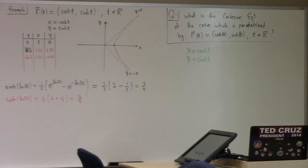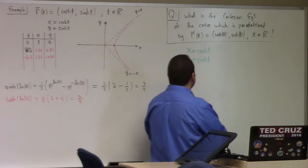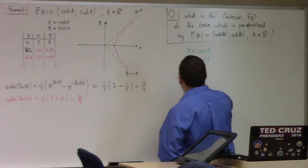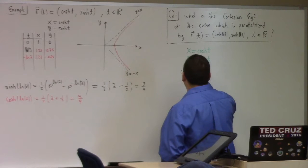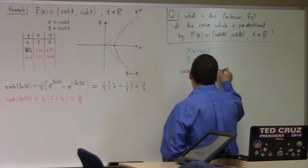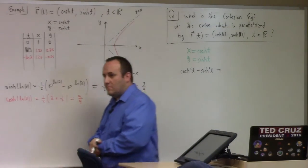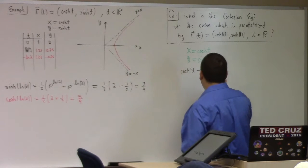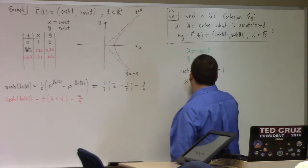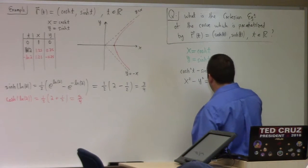For this one, I want to use my favorite fact about cosh and sinh, which is: cosh squared minus sinh squared equals one. So, lo and behold, x squared minus y squared equals one. There you go. This is the Cartesian equation for that path.